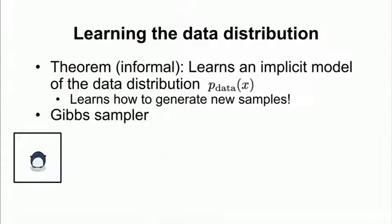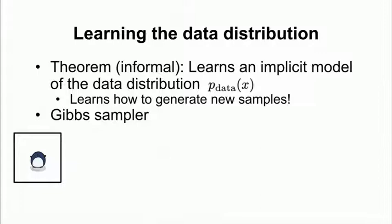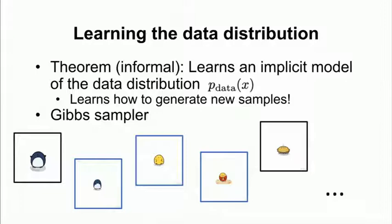you start with maybe a test point or a training point in your data set, you run it through a Markov chain, which basically means that you pass your point through the encoder, sample latent code, pass your code through a decoder, sample a data point, and you continue this process for a long time. And it gives you access to samples that look very similar to what you started with before, but they're also pretty new.